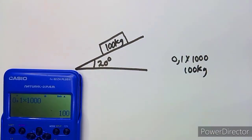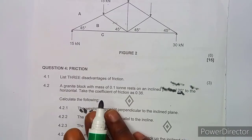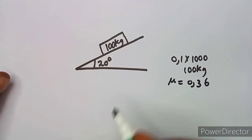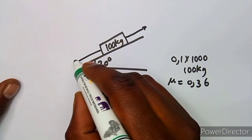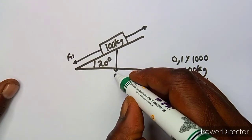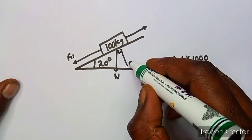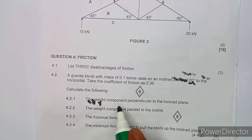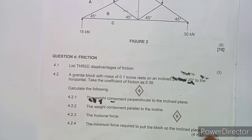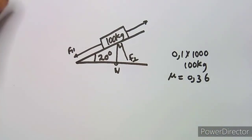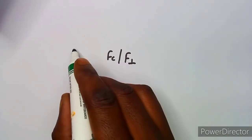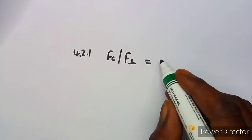So we have the mass as 100 kg. We are given the coefficient of friction as 0.36. On a diagram like this you will have the frictional force, the parallel component, the weight, and the perpendicular component. For question 4.21, the weight component perpendicular to the plane — written as F_perpendicular or F_c — is given by W cos θ.